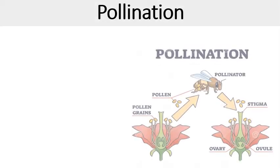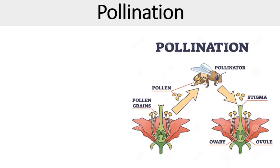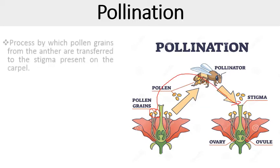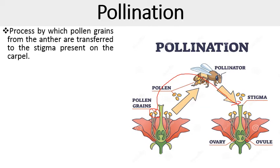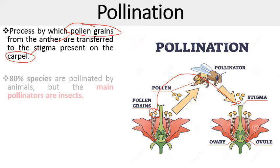So firstly, what is pollination? It is the process by which pollen grains are transferred from the anthers to the stigma of the carpel. So it is the process by which pollen grains from the anther are transferred to the stigma present on the carpel. This process is known as pollination.